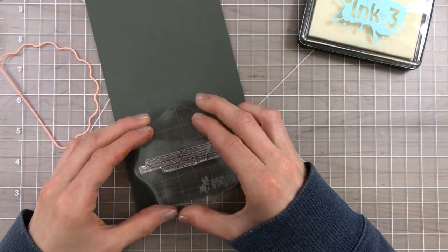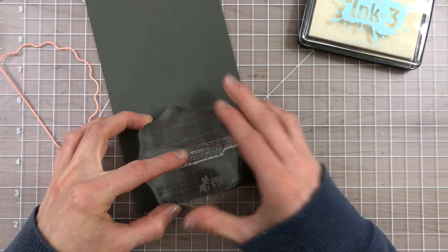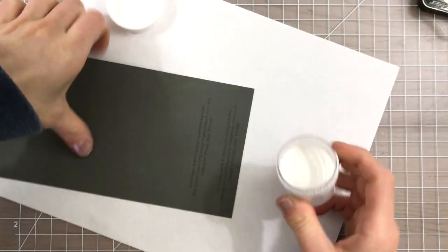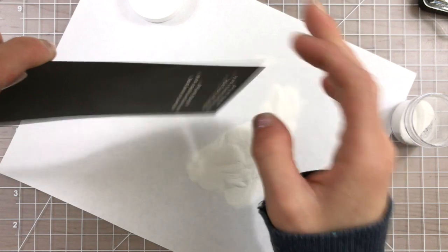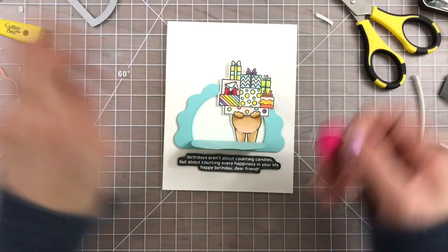I'll stamp that sentiment that I had underneath of that window onto some slate gray cardstock and emboss it with white embossing powder. Once I've heat set that, I fussy cut the sentiment out using my fine tip scissors.